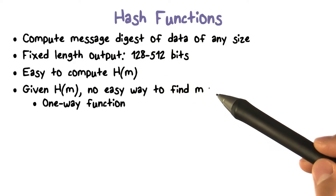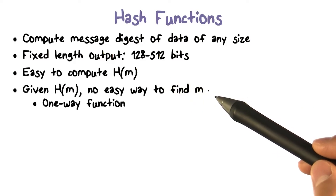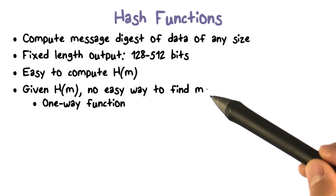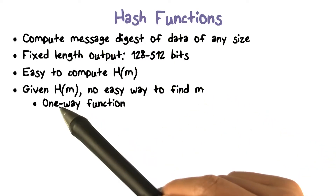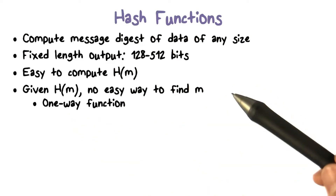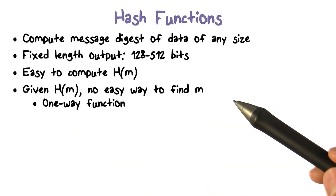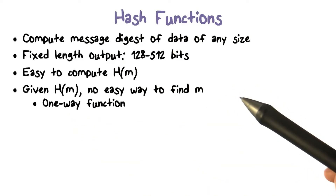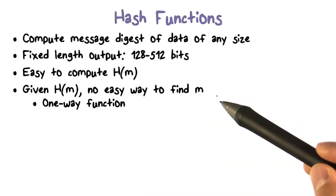For a given hash value, it should be computationally infeasible to find the input so that the hash matches the given hash value. That is, a hash function should be a one-way function.